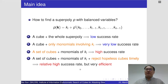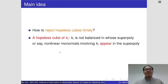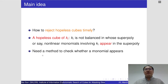Another problem is how to reject hopeless cubes timely. By calling a cube a hopeless cube of ki, we mean that the secret variable ki is not balanced in its superpoly — or equivalently, there are many nonlinear monomials involving ki appearing in the superpoly. This introduces another problem: we need a method to check whether a monomial appears in the superpoly, which can be solved by the three-subset division property without unknown subset.